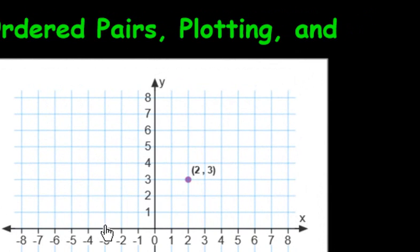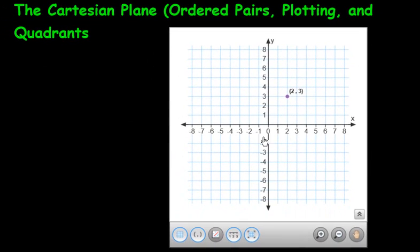An ordered pair. And the very first number you see there is the 2. And we always, with an ordered pair, you always talk about what's along this line first. And then the next number, the 3, is talking about what's along this vertical line.